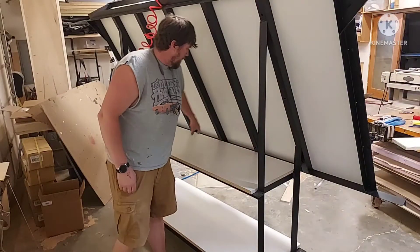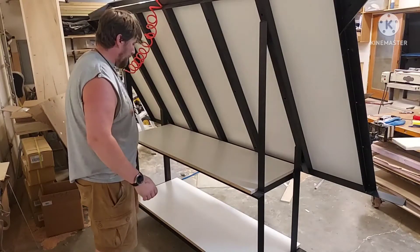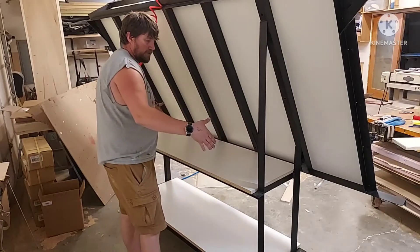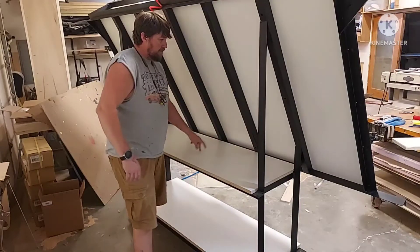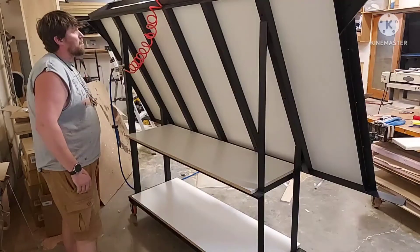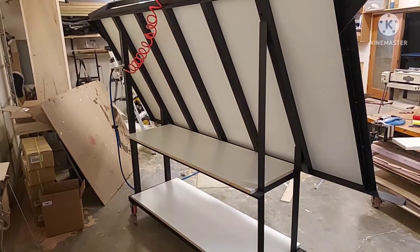We just have four angle irons going across here just to give it some bracing that way. Even without these, it was actually pretty solid. We just added those also so we could have some shelves on there.